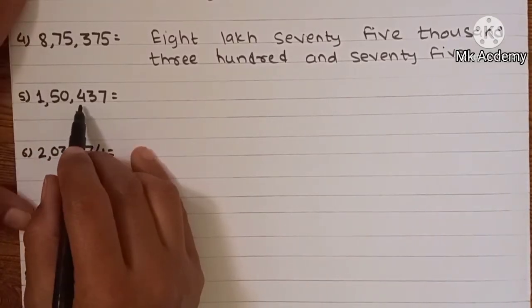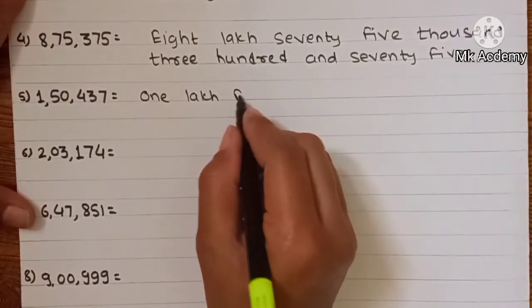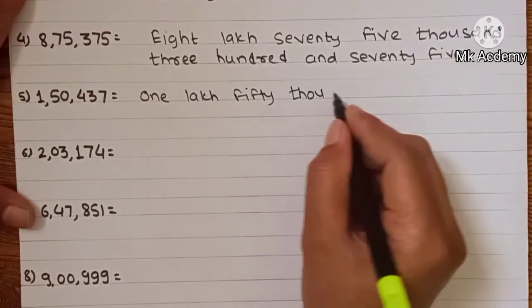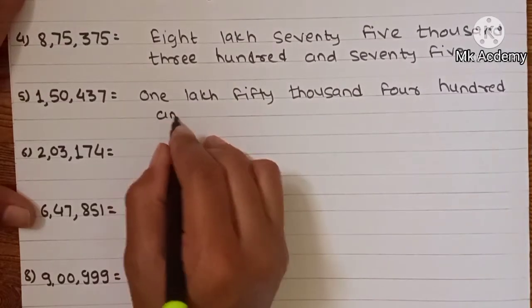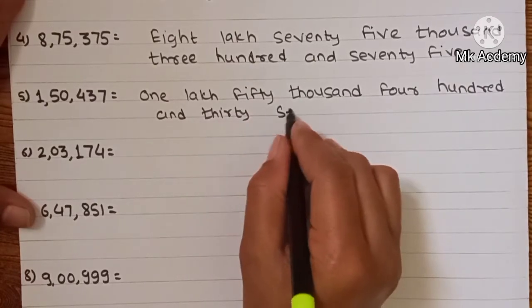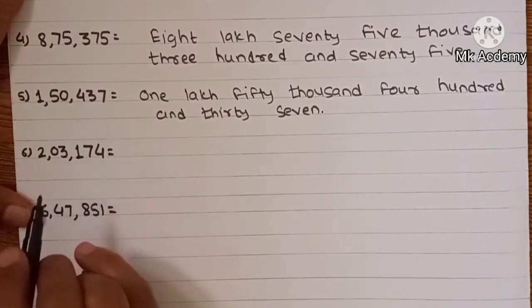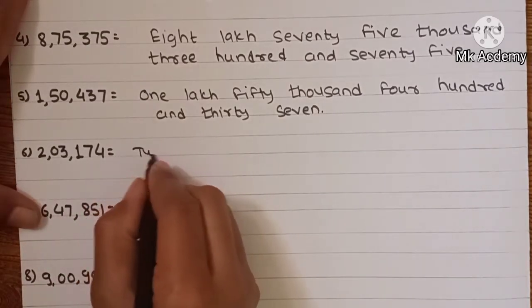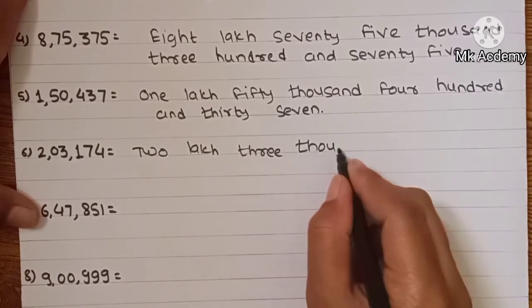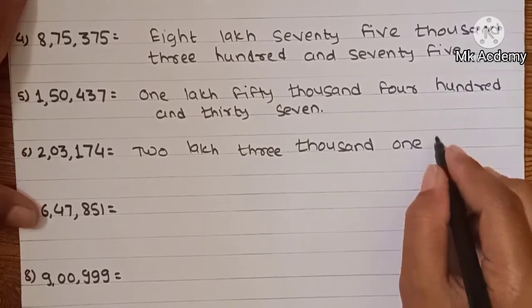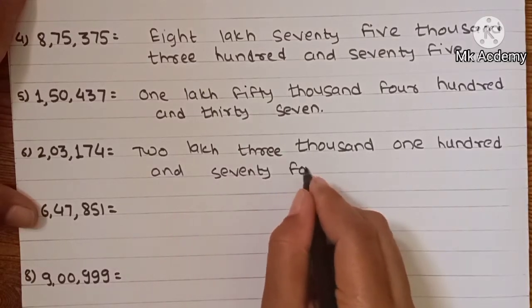Example 5: 1,50,437 — write in words: one lakh fifty thousand four hundred and thirty-seven. Example 6: 2,03,174 — write in words: two lakh three thousand one hundred and seventy-four.